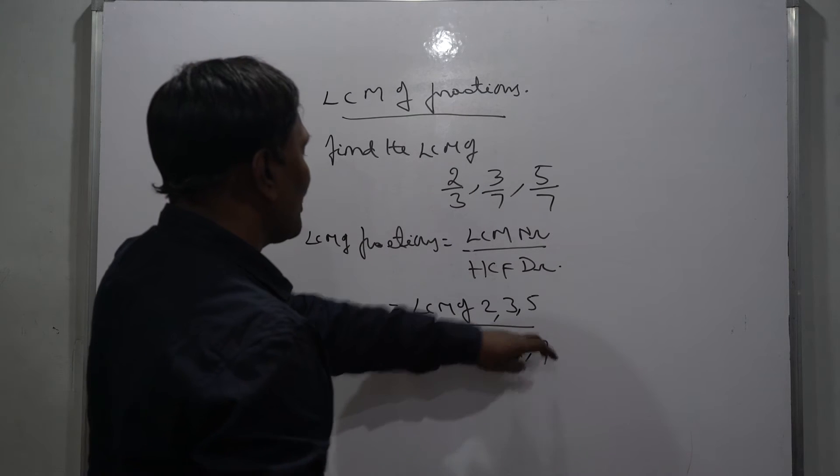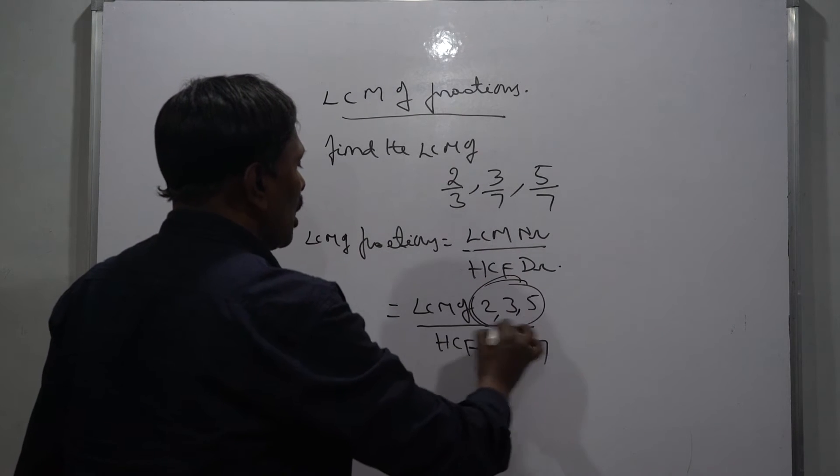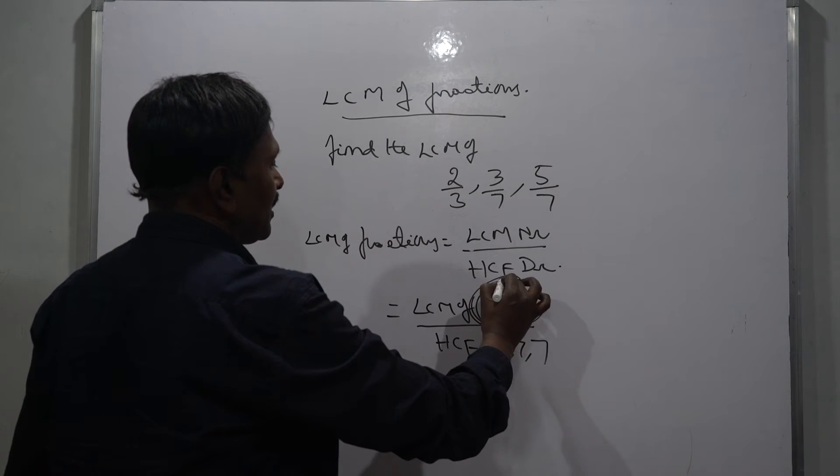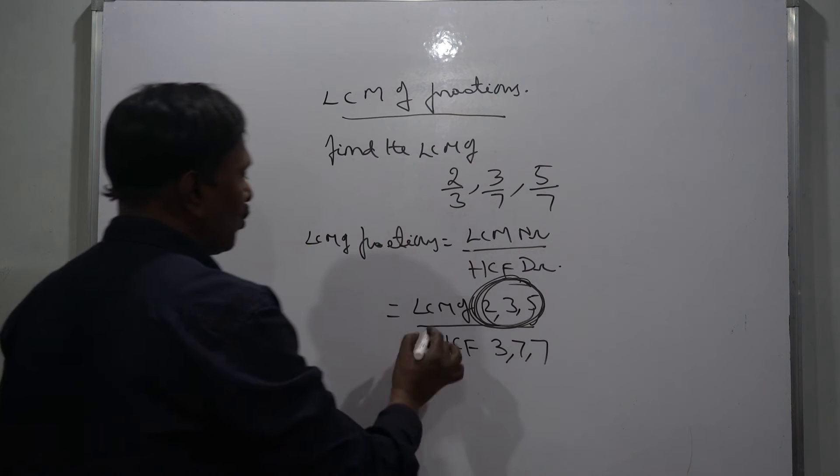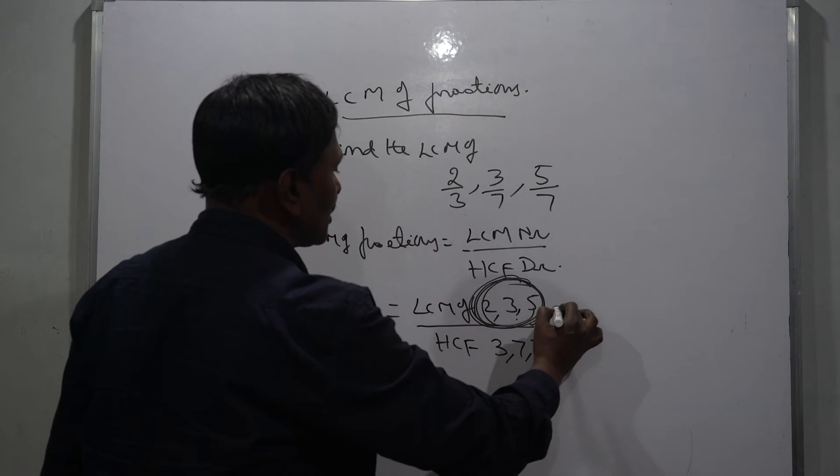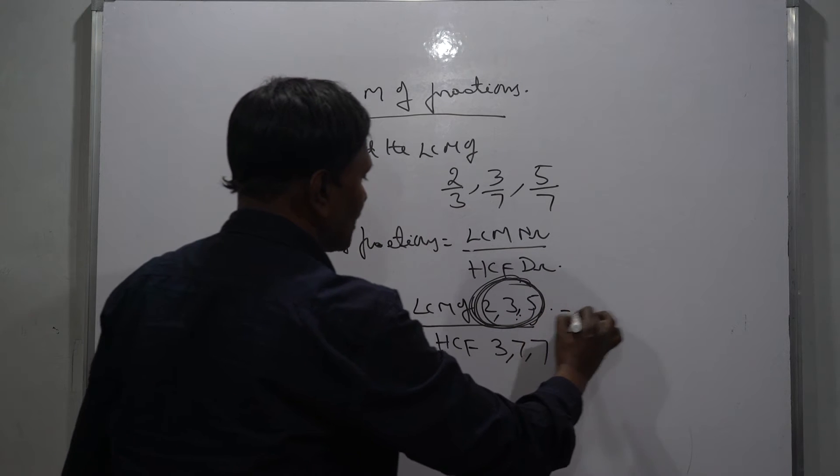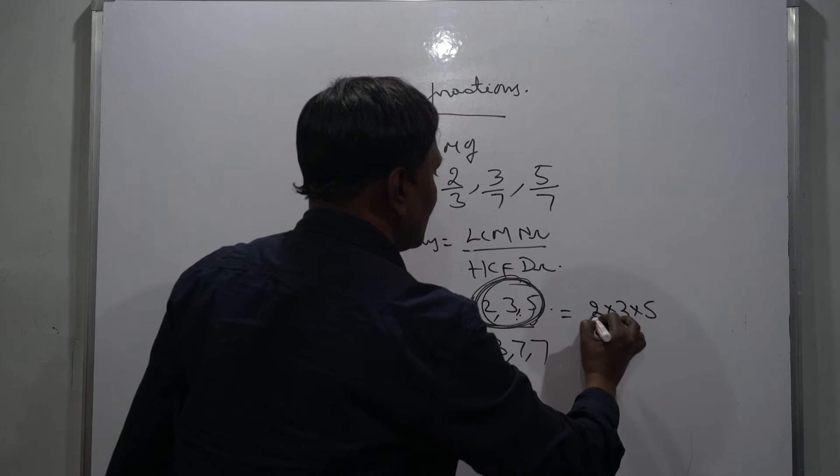So LCM of 2, 3, 5 by HCF of 3, 7, 7. Here the LCM of 2, 3, 5 - these are co-prime to each other. Just before we explain: if the numbers are co-prime to each other, to find the LCM we simply multiply those numbers.